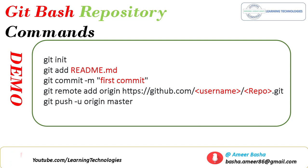In the previous session we learned how to create a GitHub repository, how to push data, and how to communicate with GitHub using git bash commands. Git init will initialize git. If you want to add any files, use git add for the local repository. To commit files, use git commit -m and add your comments. To connect to the GitHub repository, use git remote add origin and provide the URL. To push files to the master branch, use git push -u origin master.